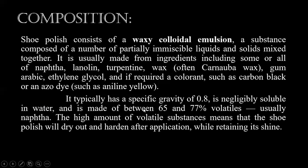Shoe polish typically has a specific gravity of 0.8, is negligibly soluble in water, and is made of between 65% and 77% volatiles, usually naphtha. Specific gravity, or relative density, is the ratio of the density of a substance to the density of a reference material — usually water, which has a specific gravity of 1.0. If an object has a specific gravity greater than water it sinks; if less, it floats. Since shoe polish has a specific gravity of 0.8, it floats on water. The high percentage of naphtha means the shoe polish will dry out and harden after application while retaining its shine.